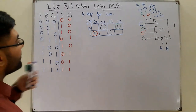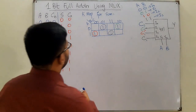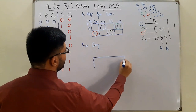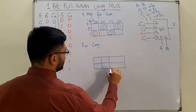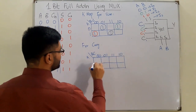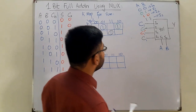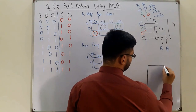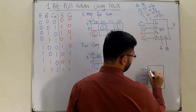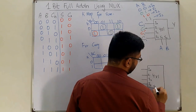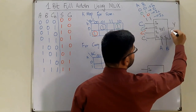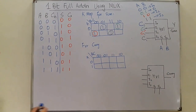Now for the carry, we set up another 8-cell K-map with A, B, C: 0 0, 0 1, 1 1, 1 0 and A: 0, 1. We need another 4×1 multiplexer with inputs I0, I1, I2, I3, two select lines S1 and S0, and output Y = carry. Again, select lines are A and B.